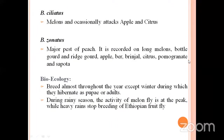Bactrocera celiatus is a common pest of melons and occasionally attacks apple and citrus. Bactrocera zonatus is a pest of peach and also affects melons, bottle gourd, ridge gourd, apple, bear, brinjal, citrus, pomegranate, and sapota.